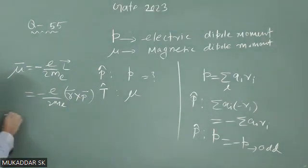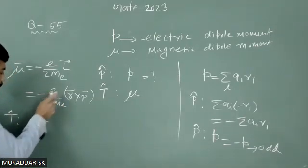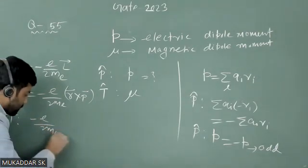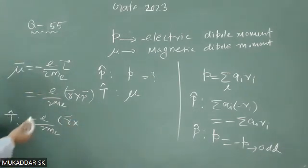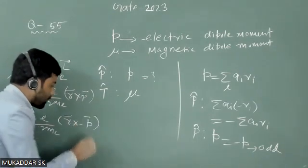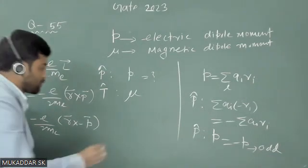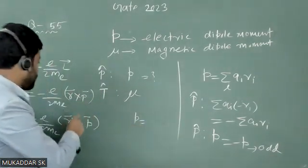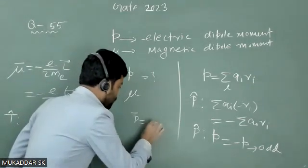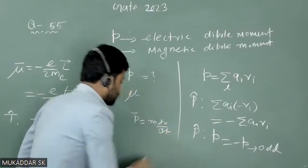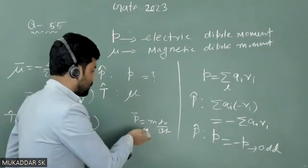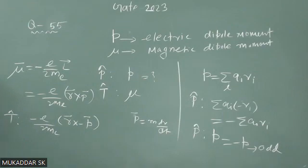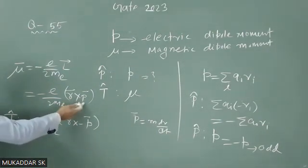Now if we apply time reversal, there will be no change in the constants e over 2m. There will also be no change in the sign of the position vector R. However, there will be a change in the sign of the linear momentum P, because P equals m dR/dt. Under time reversal, t goes to minus t, so dR/dt gets a minus sign. Therefore, under time reversal, P becomes minus P.